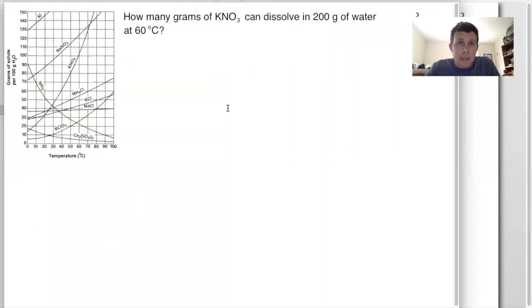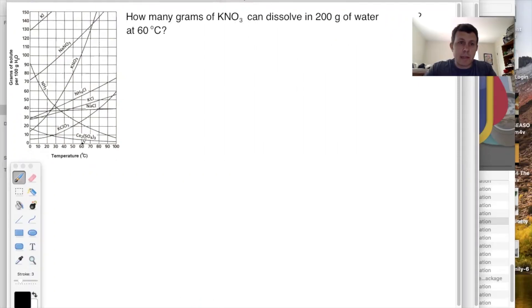So let's look at this first question. How many grams of KNO3 can dissolve in 200 grams of water at 60 degrees Celsius? So what I do is I find 60 degrees Celsius where it meets KNO3 and it looks like about 100 grams. So that means that about 100 grams of KNO3 are able to dissolve in 100 grams of water at this temperature. So it's a proportion.